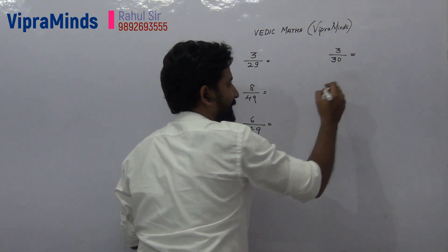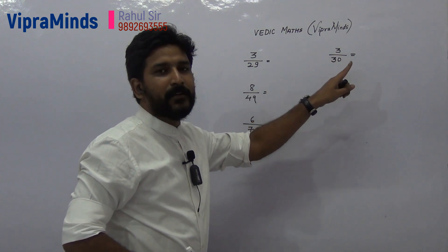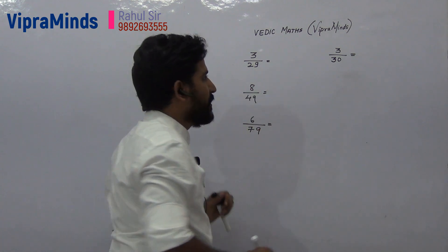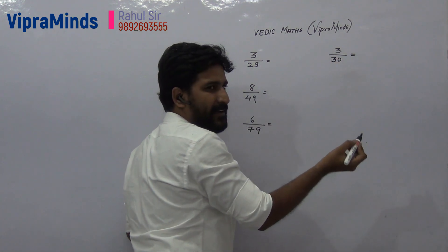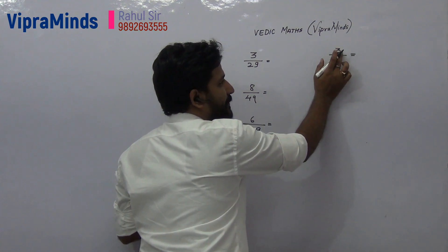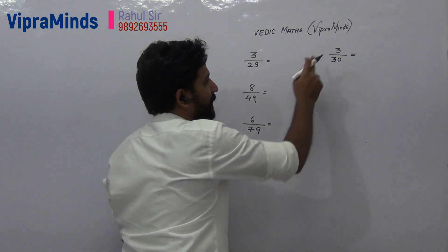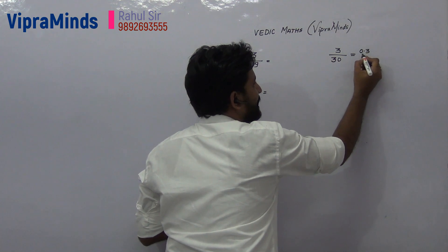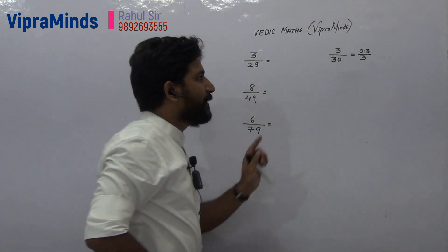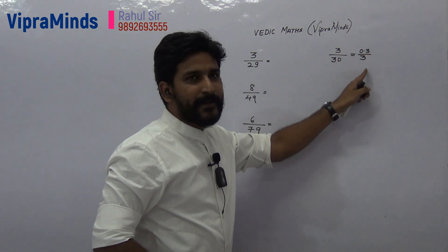The next step: remove the 0 from the denominator and shift the decimal point on the left-hand side by 1 digit. Right now the decimal is after 3. So we shift it one digit to the left — since there is only 1 digit, it becomes 0.3 divided by 3.